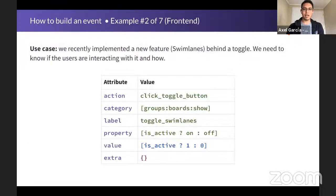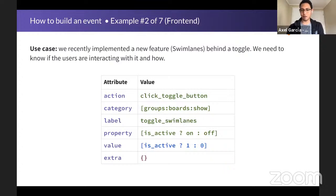In the second example, we're talking about variable data. We recently implemented a new feature behind a toggle, and we need to know if users are interacting with it and how. The action is click_toggle_button, and the category is again automatic — the name of the root of the page. The label is toggle_swing_length as the identifier of the toggle. Because it's a Boolean value, we could either put it in the property field using a ternary with on/off based on the toggle state, or use value to store the binary representation of the Boolean. We don't pass anything as extra.